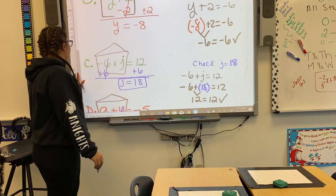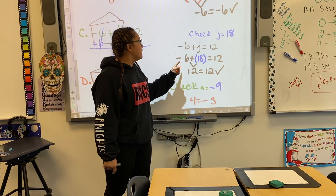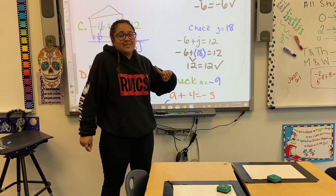Now I want to check my work for j equals 18. Negative 6 plus j equals 12 — that's our original equation. We plug in 18 where we see j: negative 6 plus 18 equals 12. What is negative 6 plus 18? 12. Does 12 equal 12? It does. We got it right.